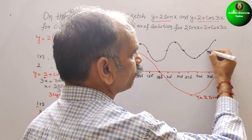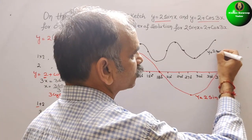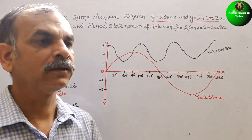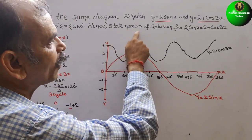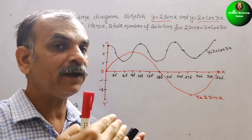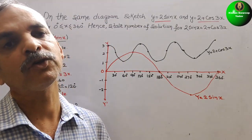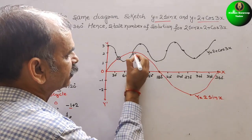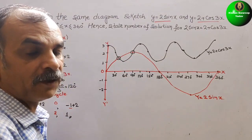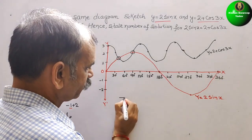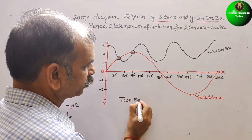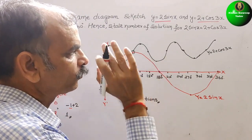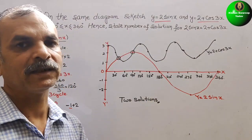This wave is y = 2 + cos 3x. Now, to find the number of solutions for 2 sin x = 2 + cos 3x, we identify where the two waves intersect on the graph. The two waves intersect at two points, so there are 2 solutions.